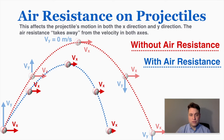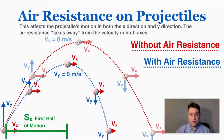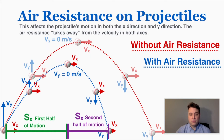The force of air resistance also stops the ball from going up as high. So the displacement in the x-direction in the first half of the motion is much larger than in the second half, and it doesn't achieve the same height. That is the shape of projectile paths with air resistance.